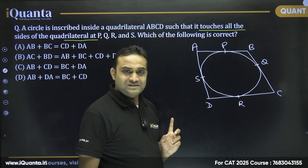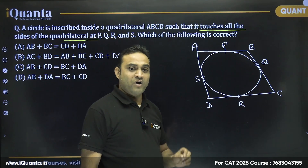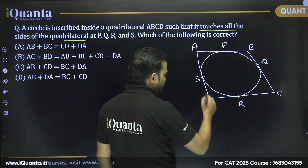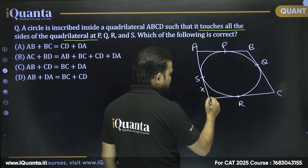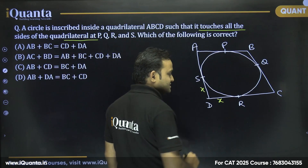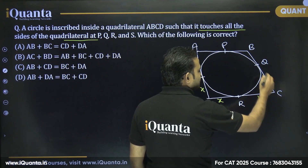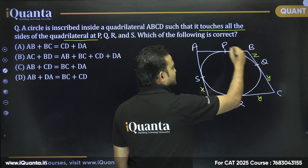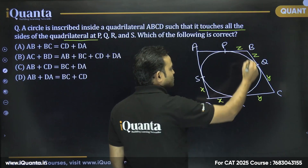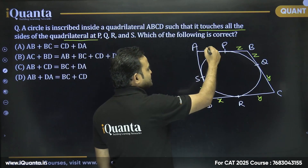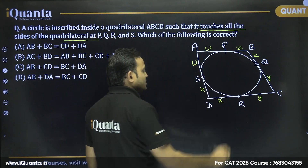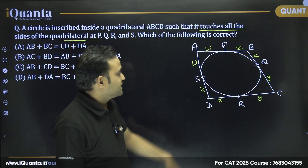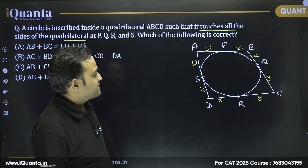The first thing that comes to mind is the concept that tangents drawn from a point to a circle are always equal. So: SD = DR = X, RC = CQ = Y, BQ = PB = Z, and AP = AS = W.